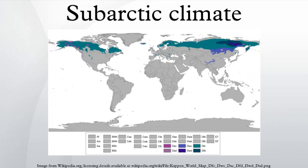Further north in Siberia, continentality increases so much that winters can be exceptionally severe, averaging below -38°C, even though the hottest month still averages more than 10°C. This creates DFD and DWD climates. The Southern Hemisphere, which has no large land masses in the upper middle latitudes that can have both the short but well-defined summers and severe winters that characterize this climate, has very few locations with this climate.